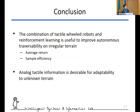In conclusion, we experimented with the combination of tactile wheeled robots and reinforcement learning to improve autonomous traversability on irregular terrain, and showed its usefulness in terms of average return and sample efficiency in simulation. We also clarified the possibility that analog tactile information is desirable for adaptability to unknown terrain. That's all for my presentation. Thank you for listening.